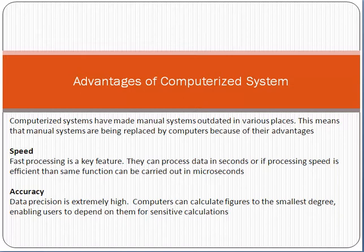So first of all, the biggest advantage is speed. The computerized system speed is very high. Fast processing is a key feature. They can process data in seconds, or if processing speed is efficient, the same function can be carried out in microseconds.